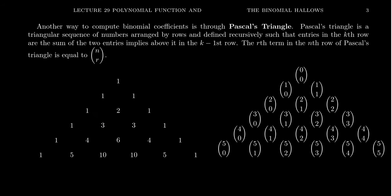A more convenient way to compute binomial coefficients is recursively, using a number array called Pascal's Triangle. And I'm not talking about Pascal from Disney's movie Tangled — it's not a chameleon. We're talking about the mathematician and scientist Blaise Pascal. This is a recursive triangle of numbers constructed by a specific pattern. You start off with the number one.